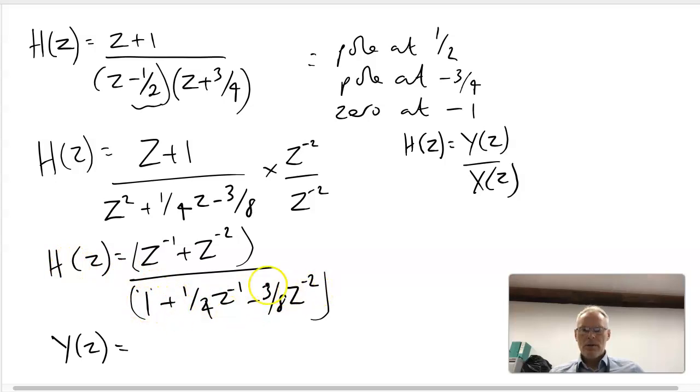We will end up with X(Z) Z minus one because of this term, added to X(Z) Z minus two because of this term. This positive because it will come over the other side of the expression becomes a negative. We end up with a quarter Y(Z) Z minus one.